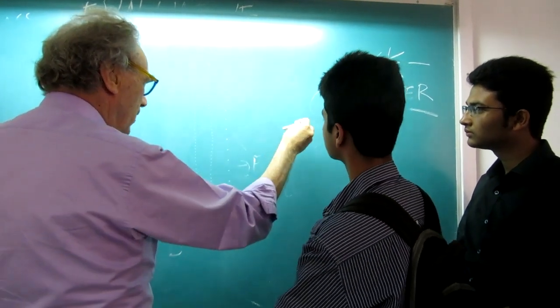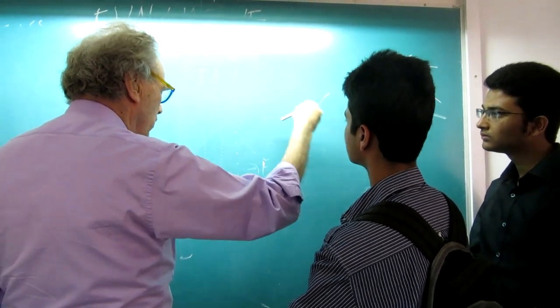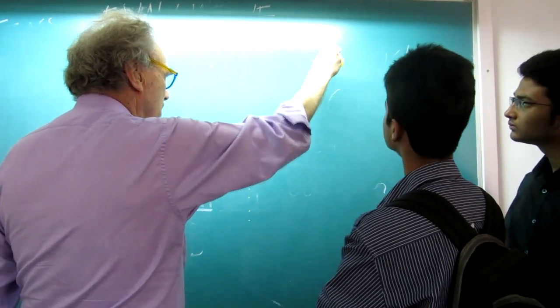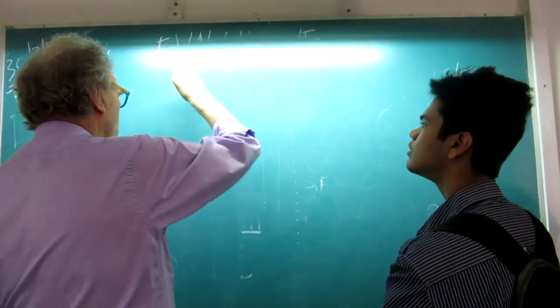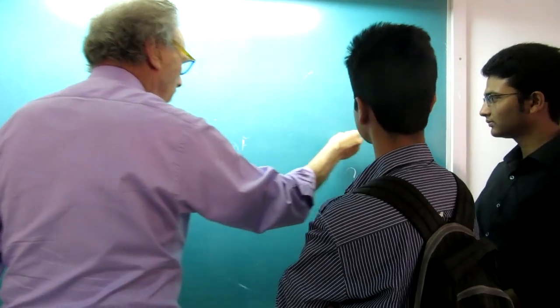Once you can do this, then if you do it horizontally, you always have to hold the chalk pointing in the direction that you do it. So if you do it in this direction, then you have to hold it like this. If you do it in this direction, you have to hold it like this. If you do it horizontally, you have to hold it like this.